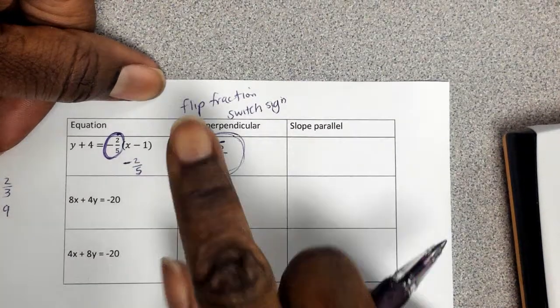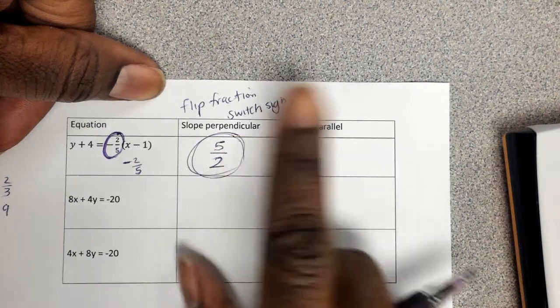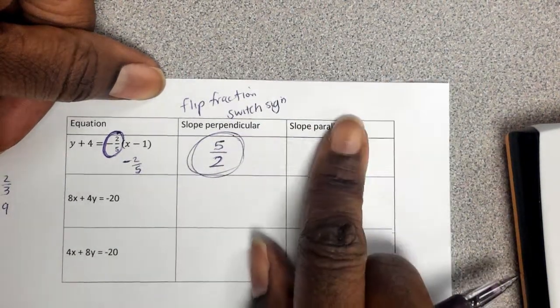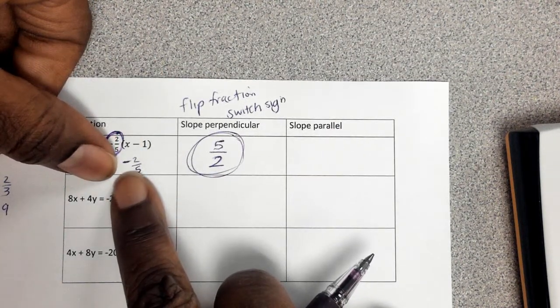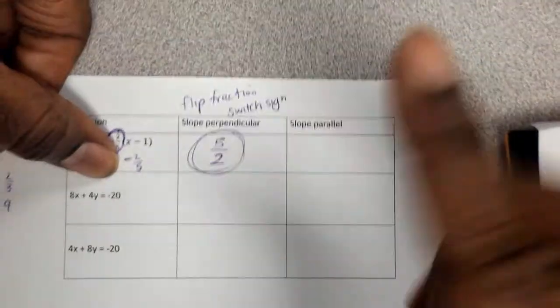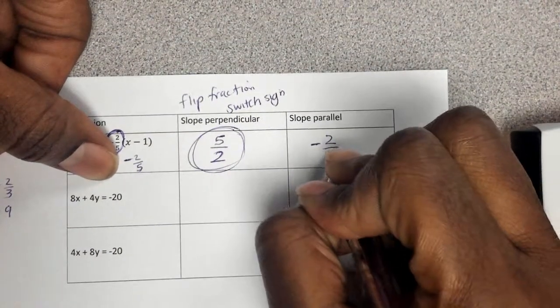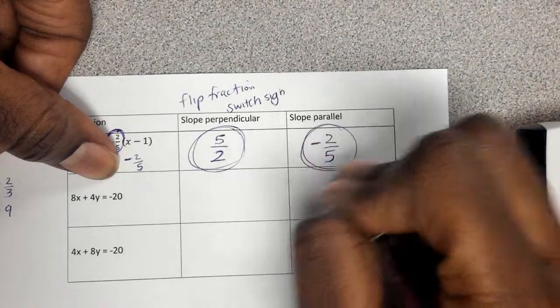So maybe we should write that. Flip the fraction. And what do you switch? Switch the sign. If it's negative here, that means it should be positive. And there, I have perpendicular. For perpendicular, you flip and switch. Remember parallel lines have the same slope.